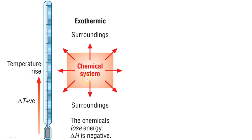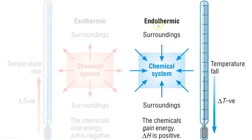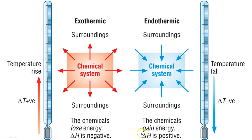In an exothermic reaction, the temperature is going to rise. The system is losing energy as heat to the surroundings, so delta H is negative. The temperature change is positive, but delta H is actually negative. In an endothermic reaction, the exact opposite: the system is absorbing heat, so the temperature falls, but the gain in energy is positive. You're getting that money back — delta H is positive because you're gaining energy.